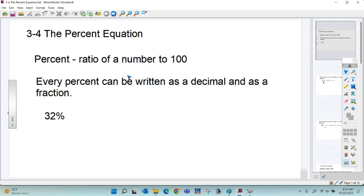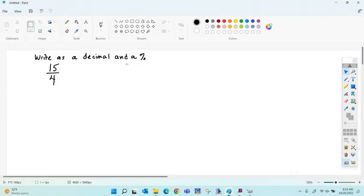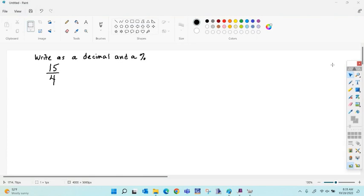So percent means out of 100. It's a ratio of a number to 100. Every percent can be written as a decimal. If we think of it as being out of 100, we can take a look at the first one that I've got there for you to do. We can write everything as a decimal and as a percent.